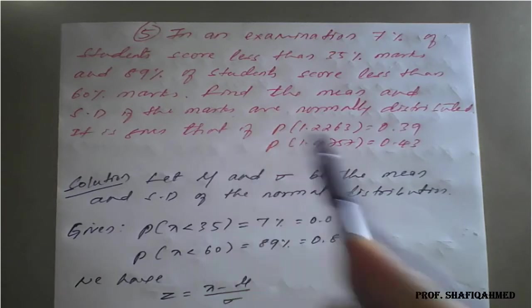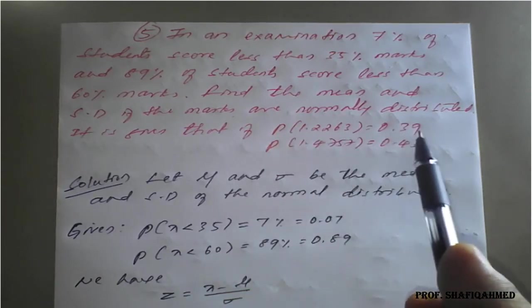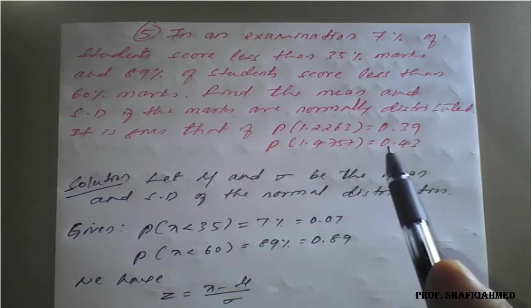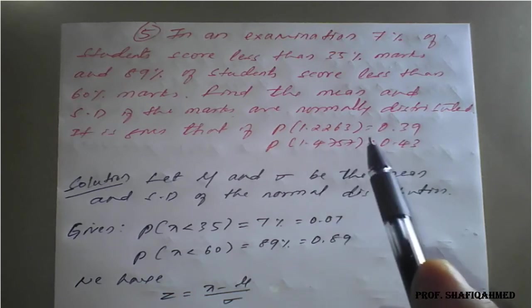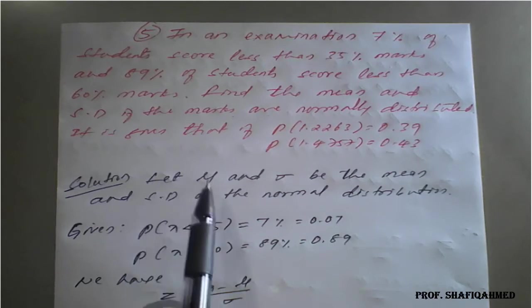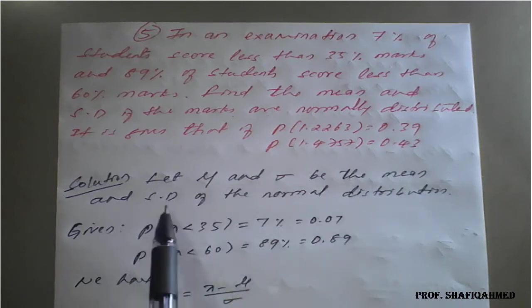It is given that here they have given the value, that is P of 1.2263 is nothing but 0.39 and P of 1.4757 is equal to 0.43. Usually you will get values in the examination also. So the same question, let mu and rho be the mean and standard deviation of the normal distribution given.